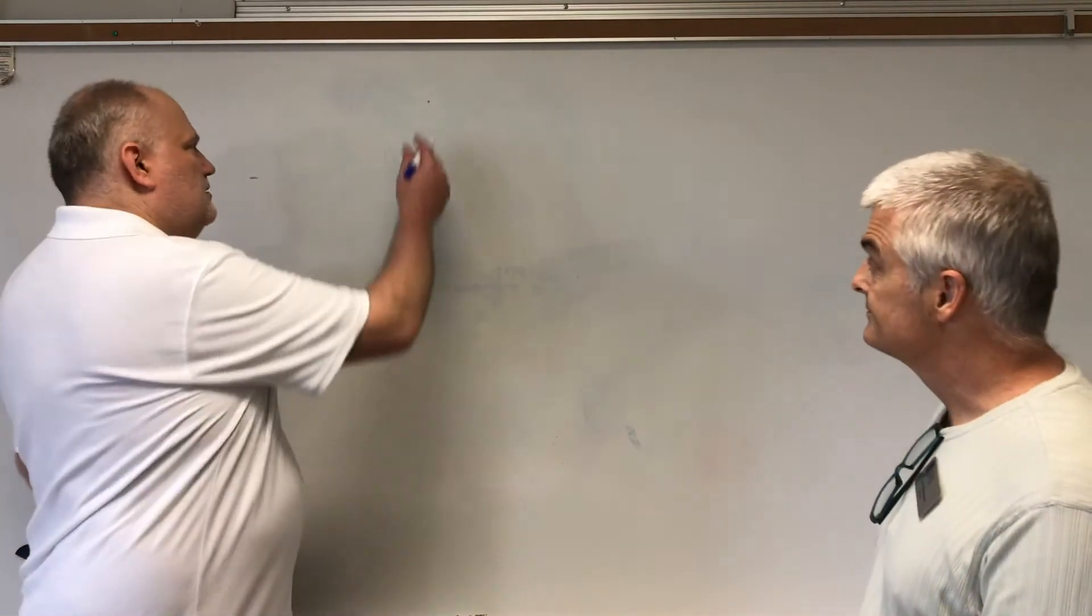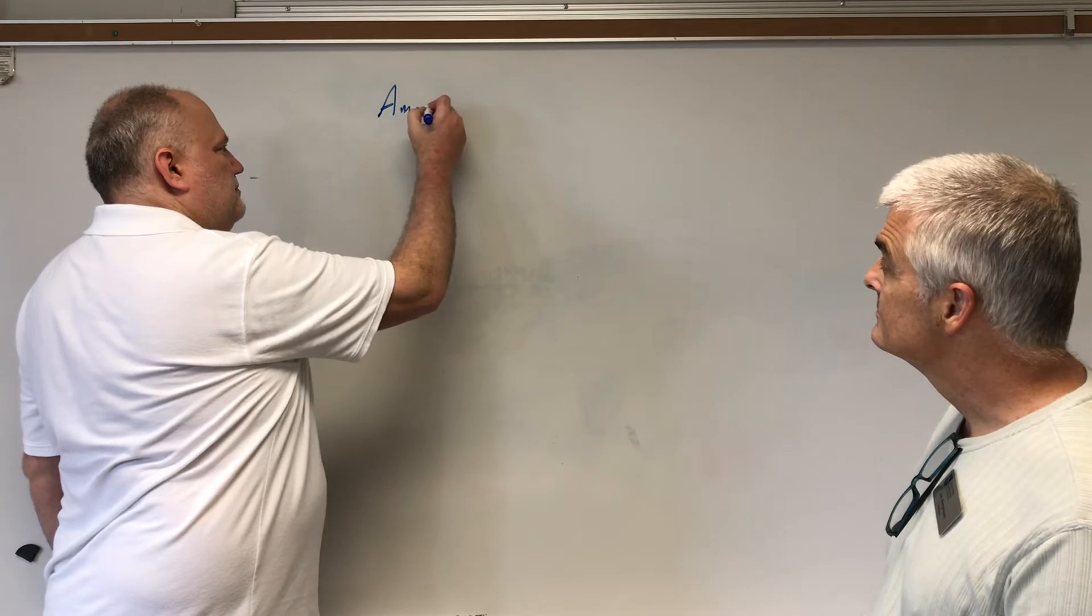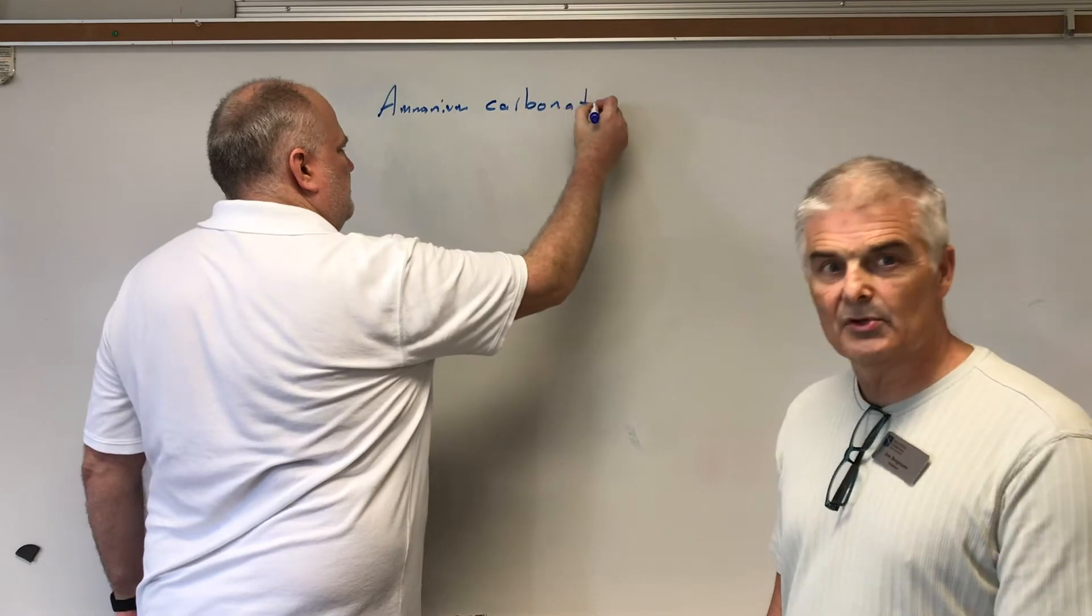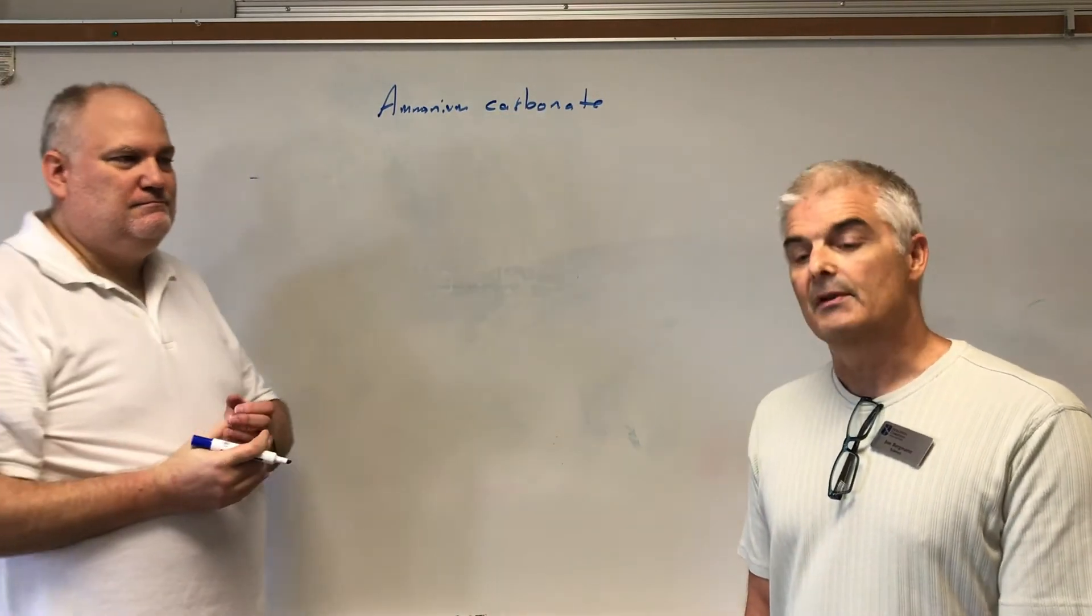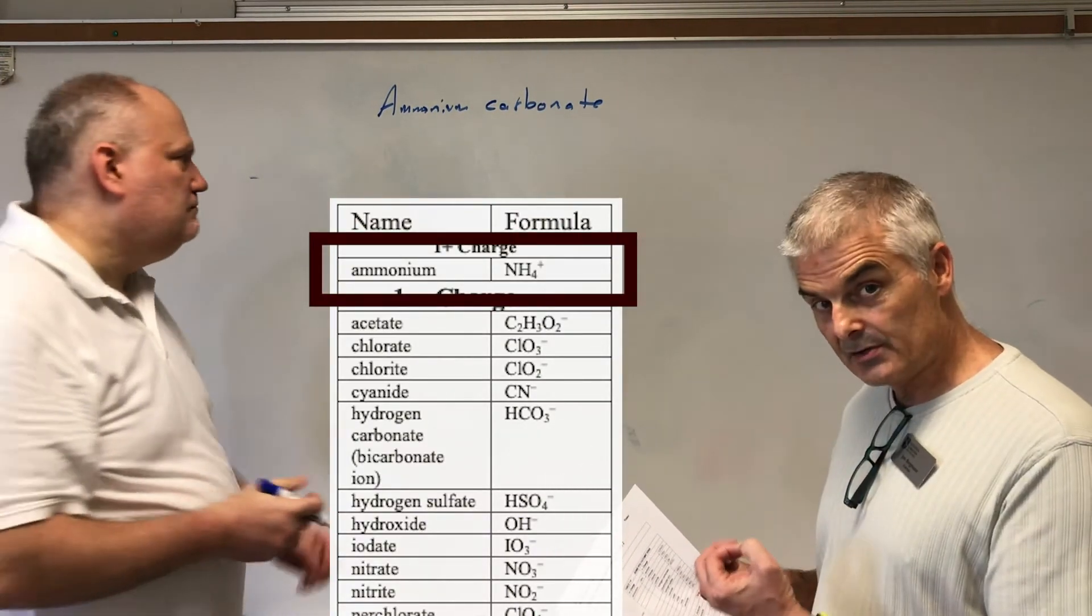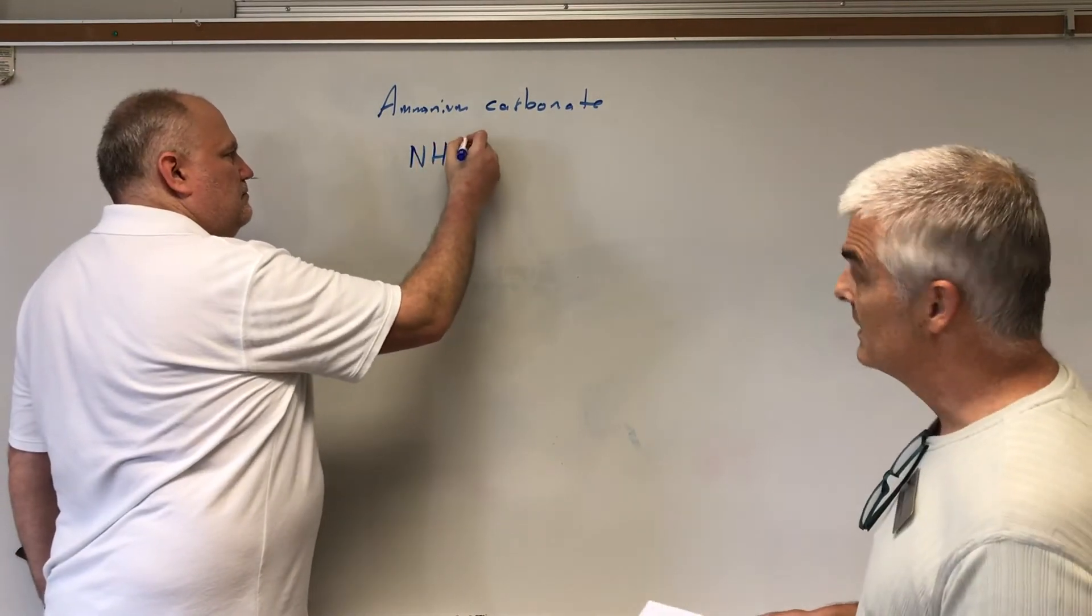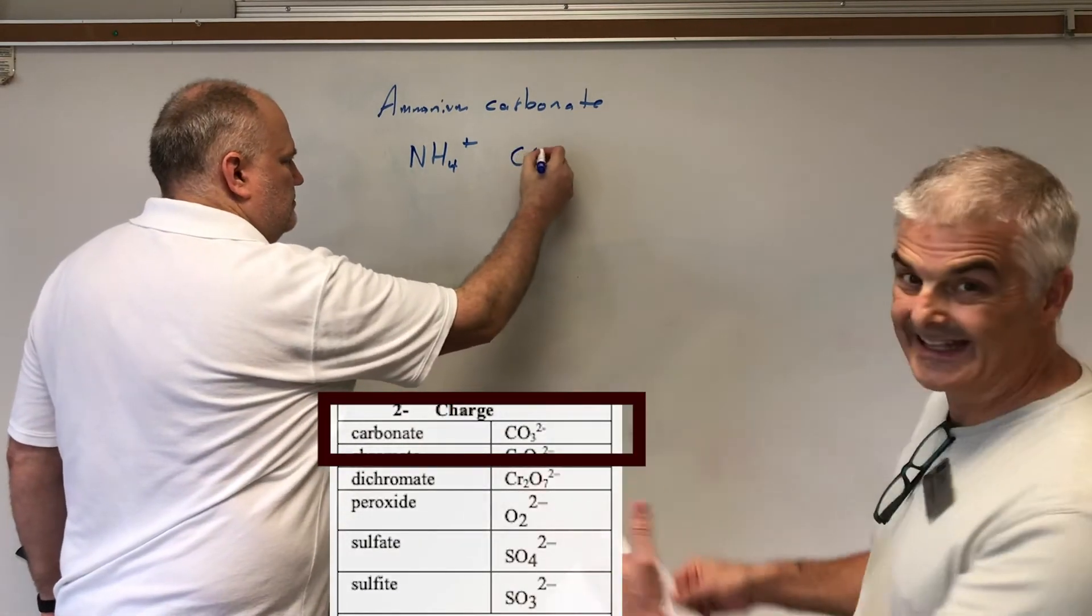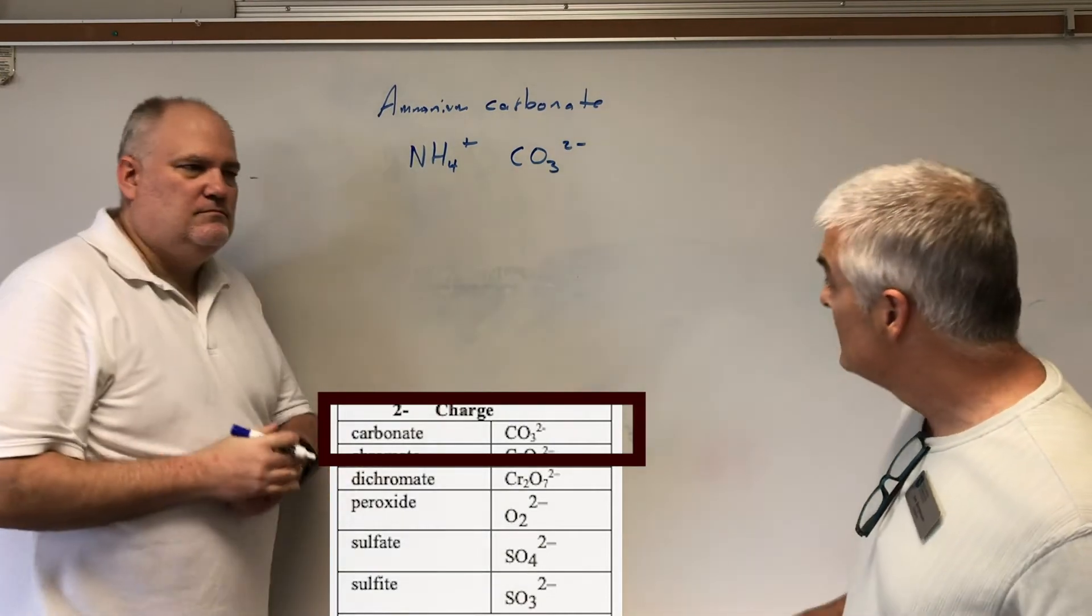So, let's do another example. Let's go crazy on everything here. Let's go ammonium carbonate. Now, ammonium, you're going to say, wait a second, the cation, that's not one of the elements on the periodic table, ammonium. But if you look at your polyion list, this is actually the only common positively charged polyatomic ion. So, if you notice, it's NH4, positive one. And carbonate, again, look at the table here. It has an ate ending. So, it's going to be CO3, two minus.